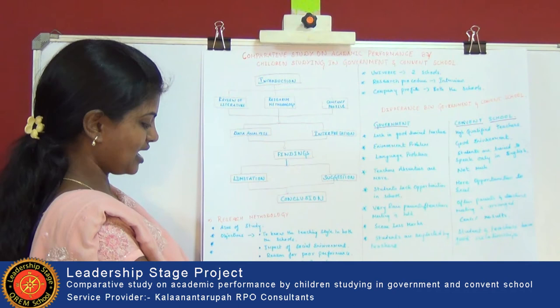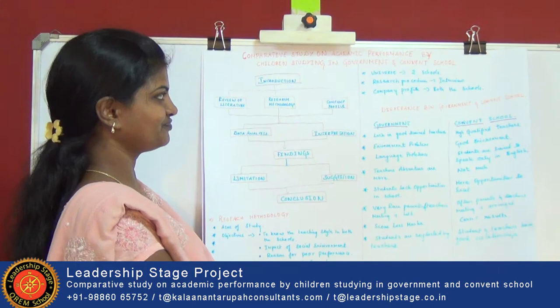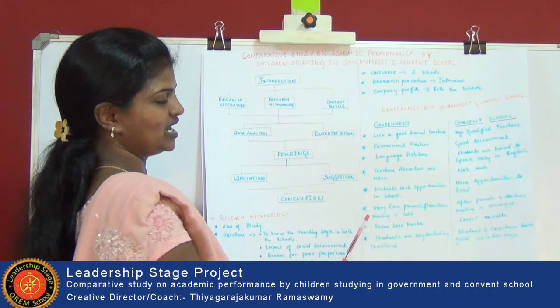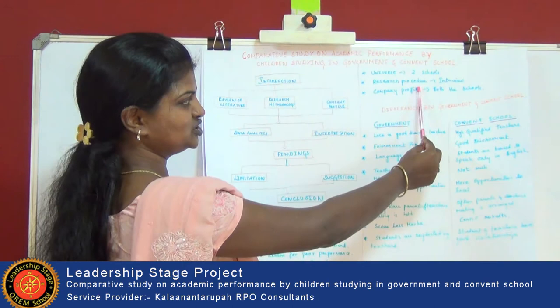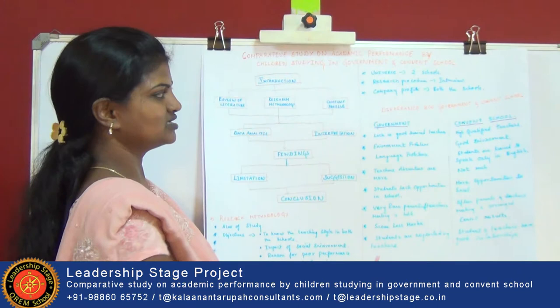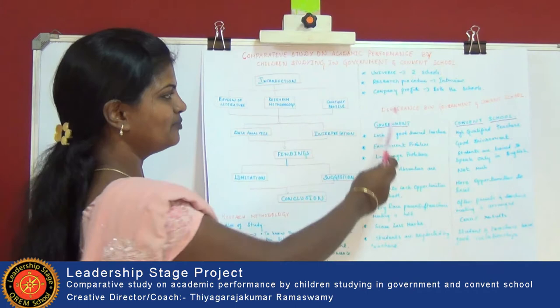Sampling process — it's probability-based, taken in a random way. The universe covers two schools in the locality: one is a government school and one is a convent school. Research procedures involve interviews — face-to-face, direct interviews being taken with children in the schools.